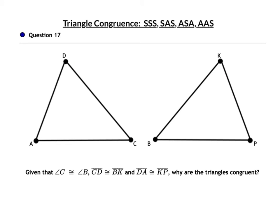For question 17, we have angle C congruent to angle B, CD congruent to BK, and segment DA congruent to segment KP. Pay close attention to the order — what we have is Side-Side-Angle. Side-Side-Angle is a bad word spelled backwards. Don't use it — these triangles are not congruent.